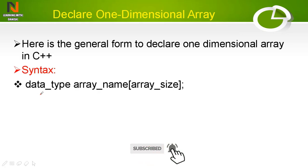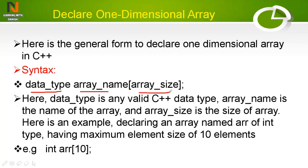For the declaration syntax: first write the data type, then the array name, and in the brackets write the array size. For example: int is the data type, 'adr' is the array name, and 10 is the array size, which contains 10 elements all of type integer.